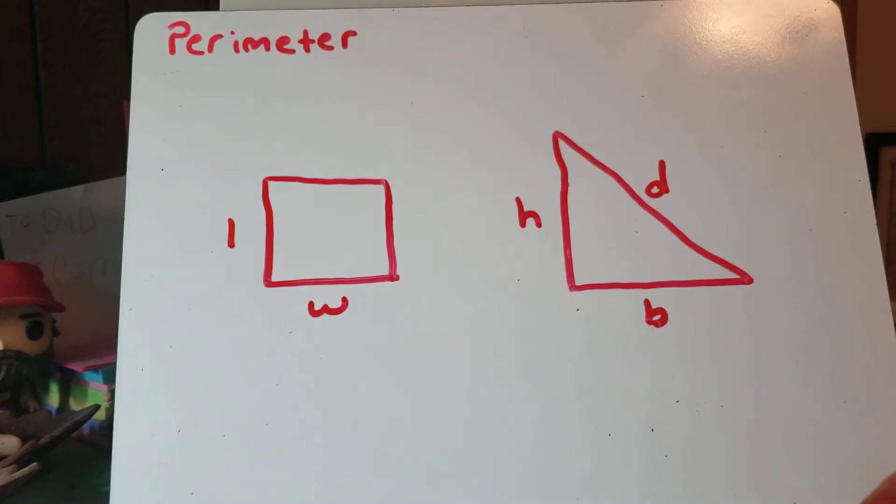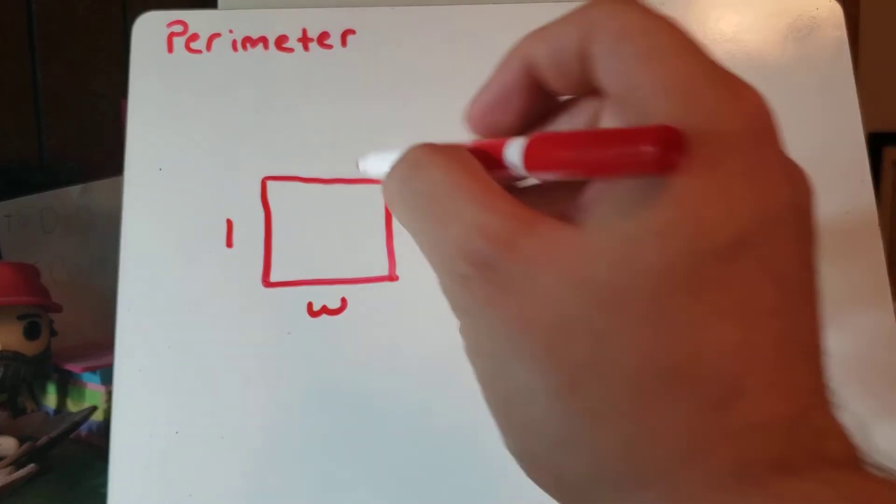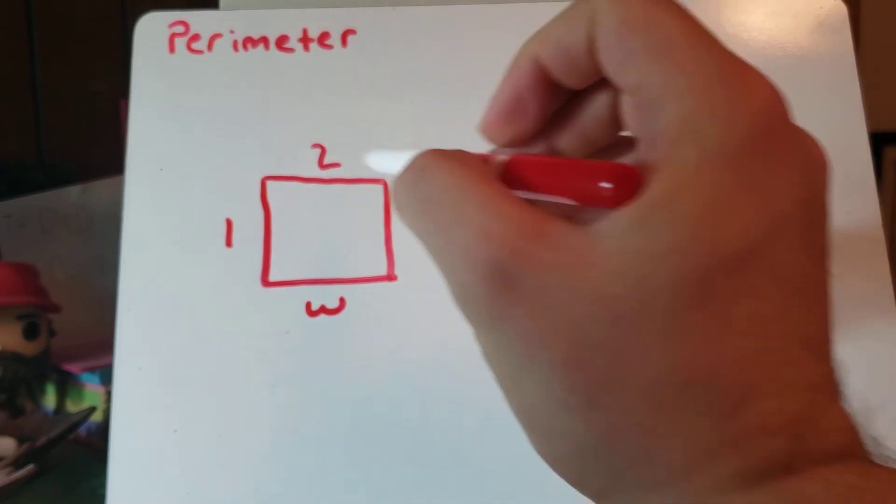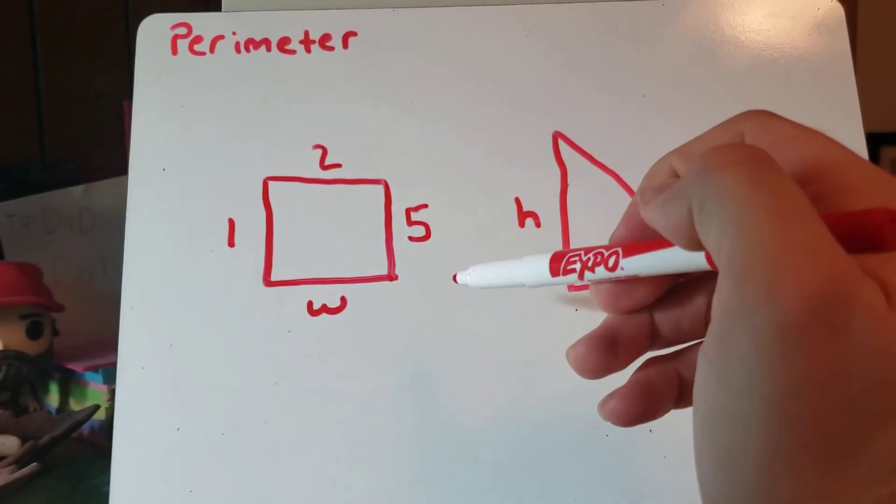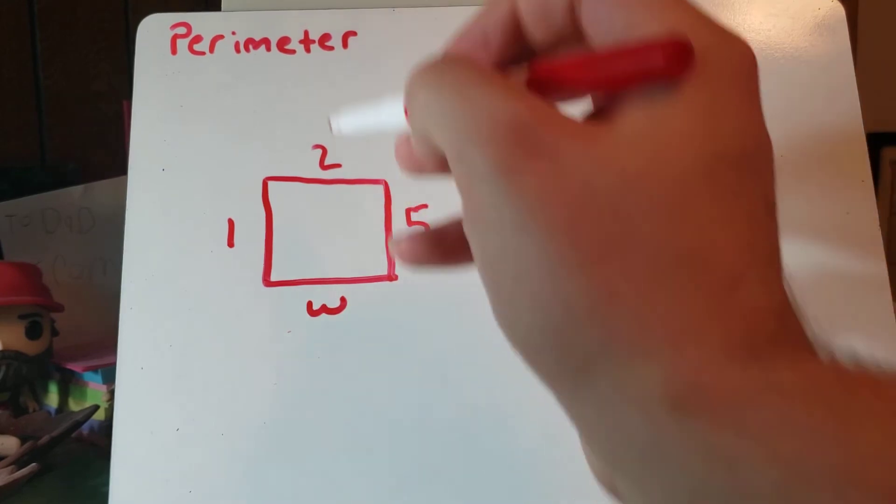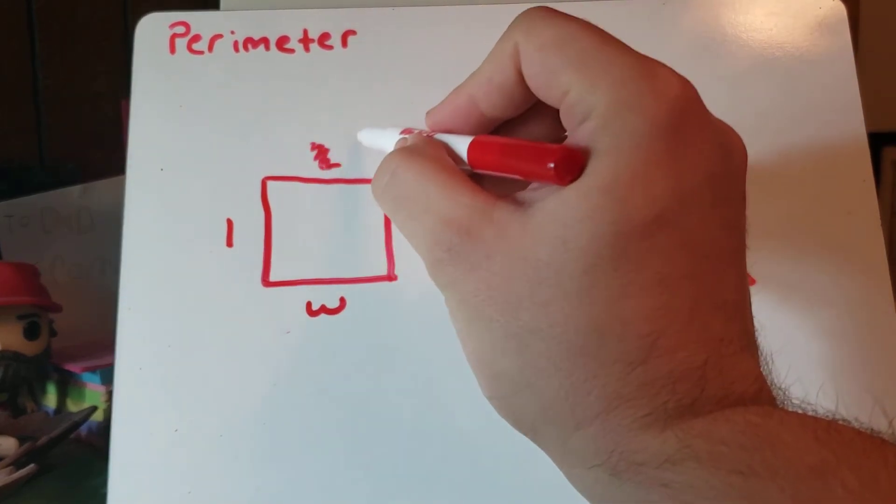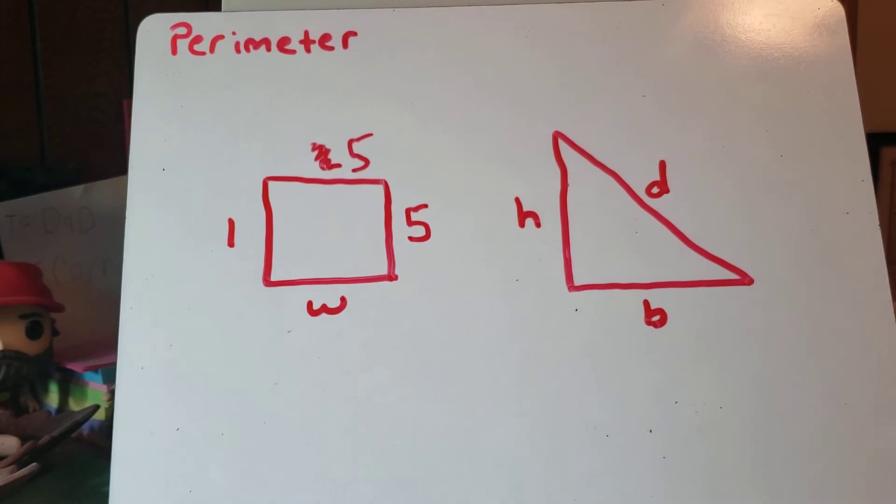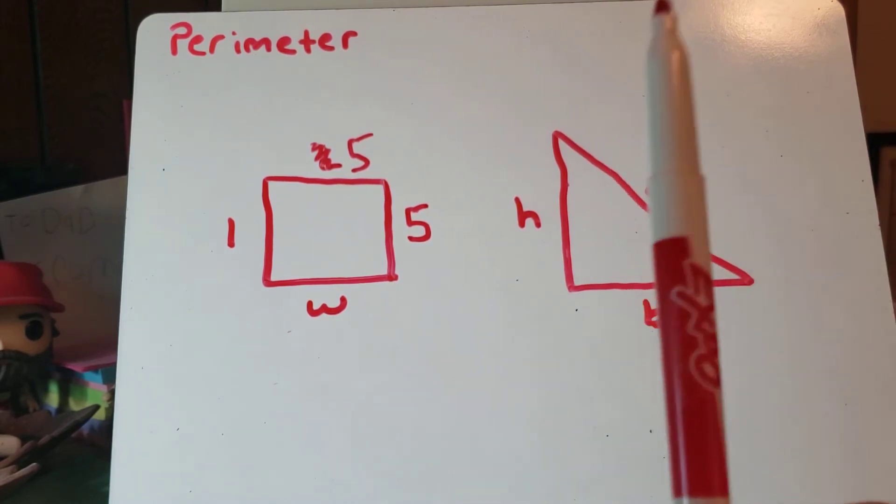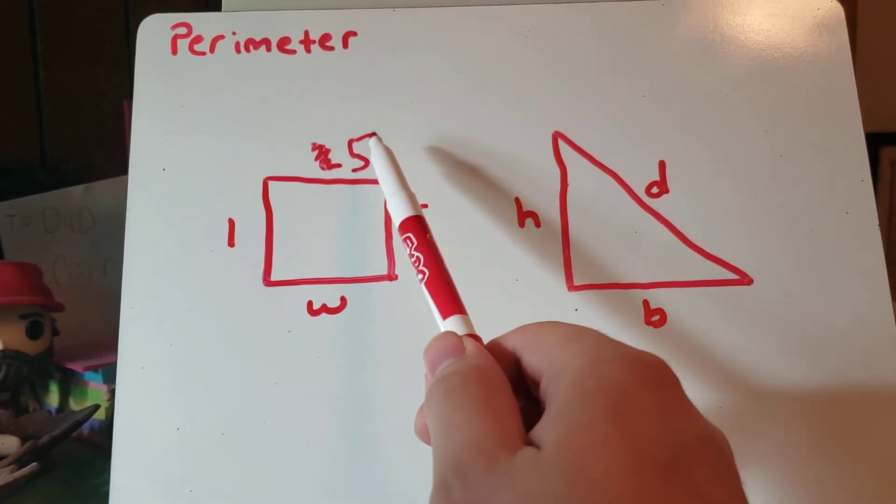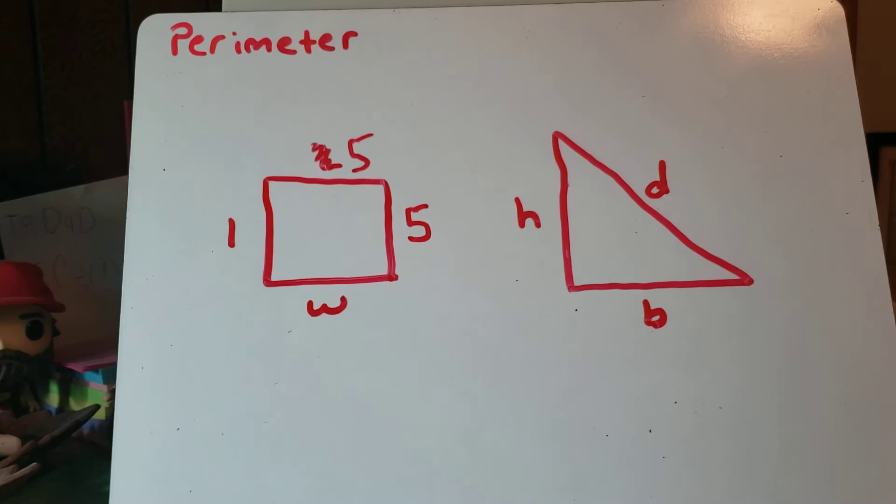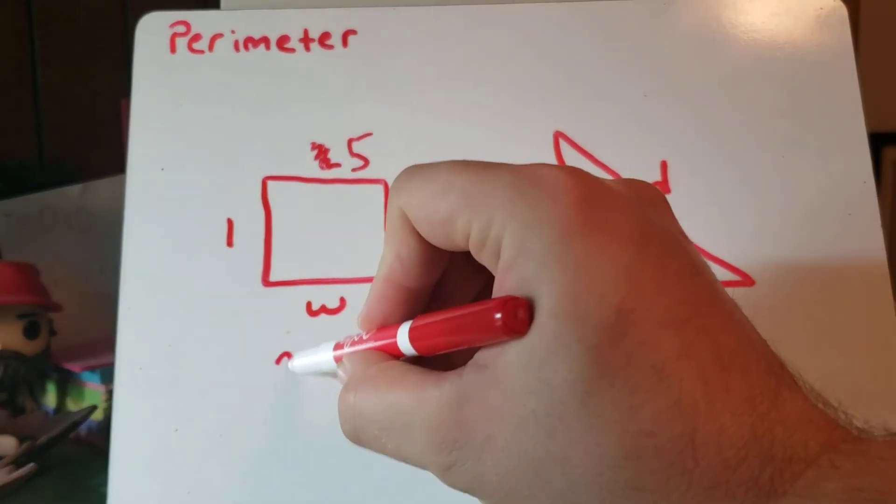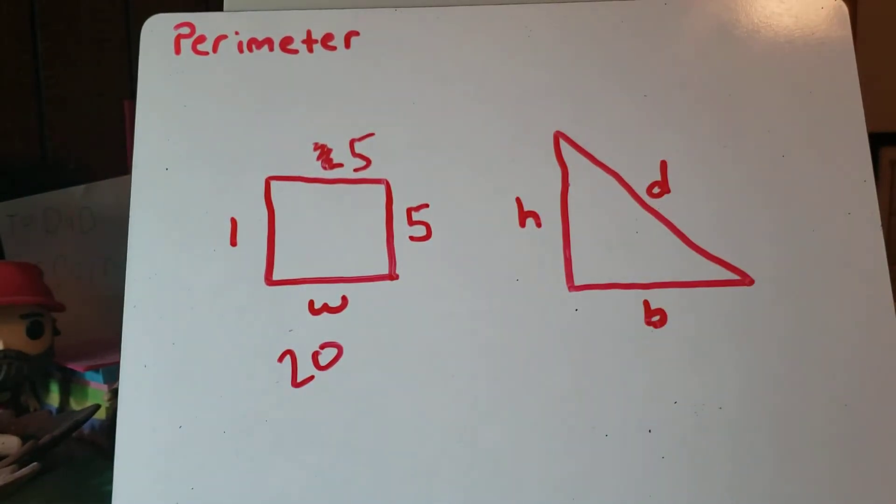So let's put some numbers in there so we can do an example. Let's say this one is two, and this one is five. I guess that's a square, so that doesn't make much sense. Here, we'll get rid of the two. We'll make them both five. There we go. Now it's a square. So if we add the length and the width up twice, we would get five plus five plus five plus five, and that would be 20. So that's the perimeter of that square.